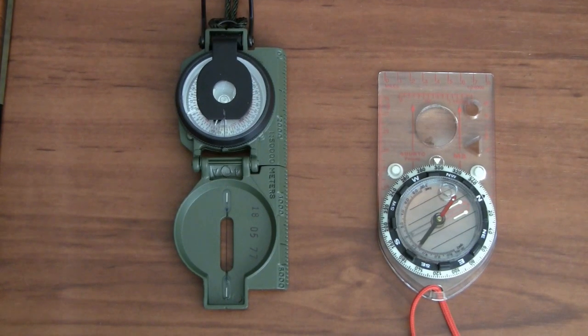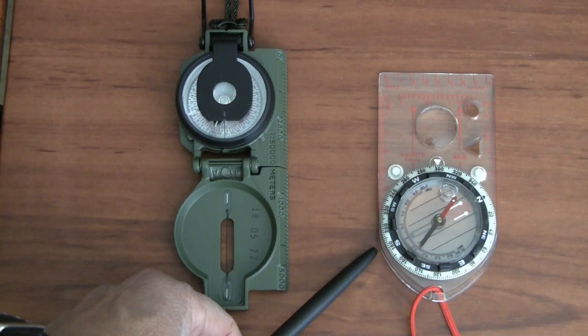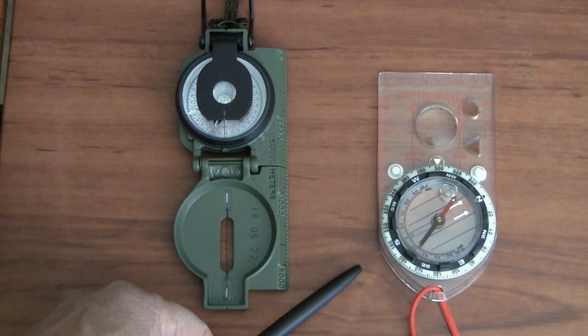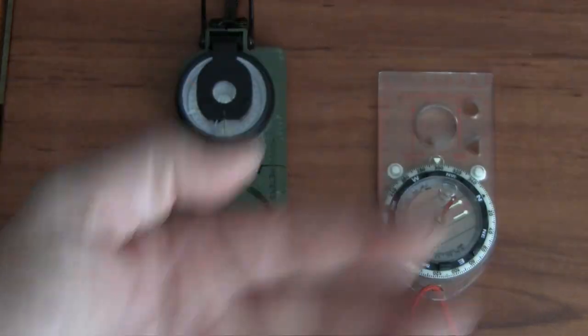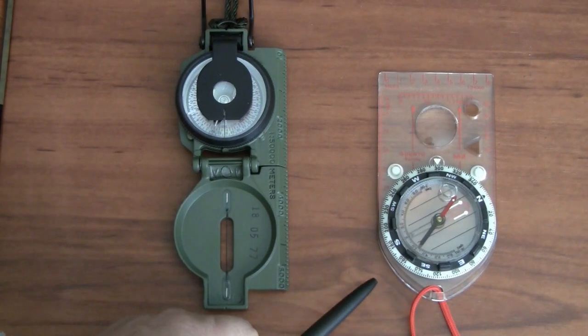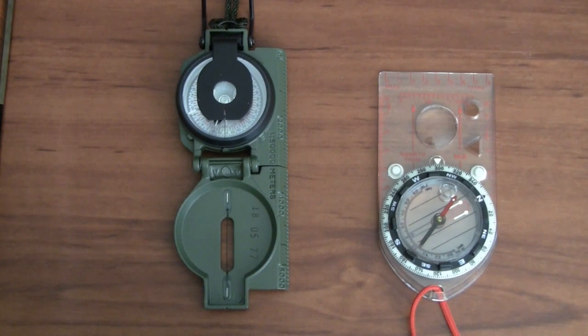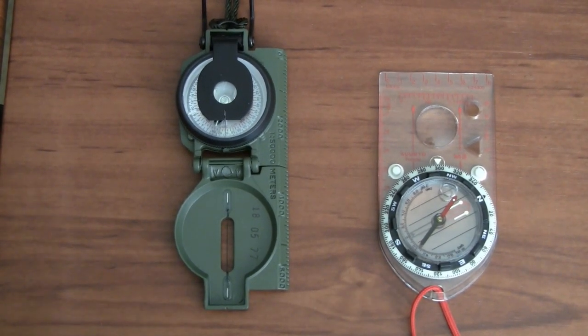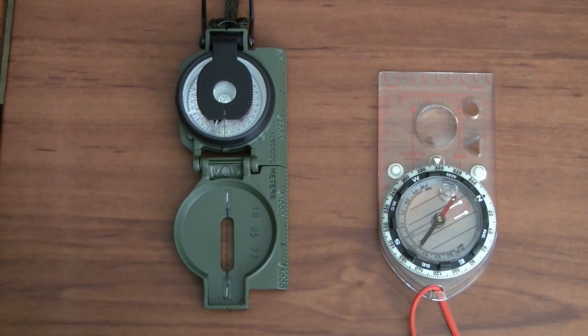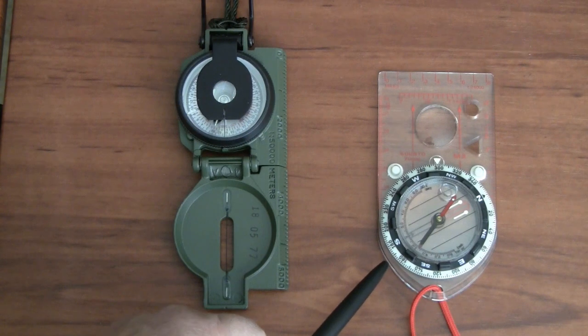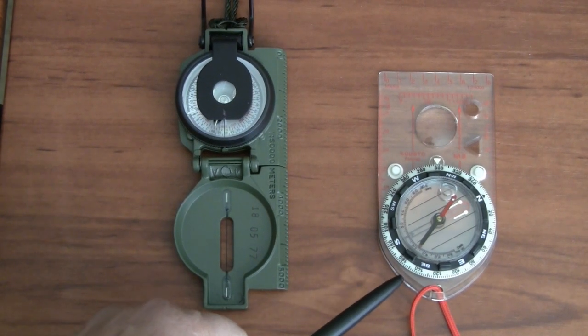There are basically two types of magnetic compass available. One is called a base plate, which is represented by this Suunto M3. It's called a base plate because it lays flat on the surface and you would have to have it in your hand with your hand flat. So this is a base plate type compass, and they're very popular. And this is a Suunto, S-U-U-N-T-O. Today they're made in China, but they're from Finland originally, and this particular one I've had for maybe 15 years. And this one was in fact made in Finland.